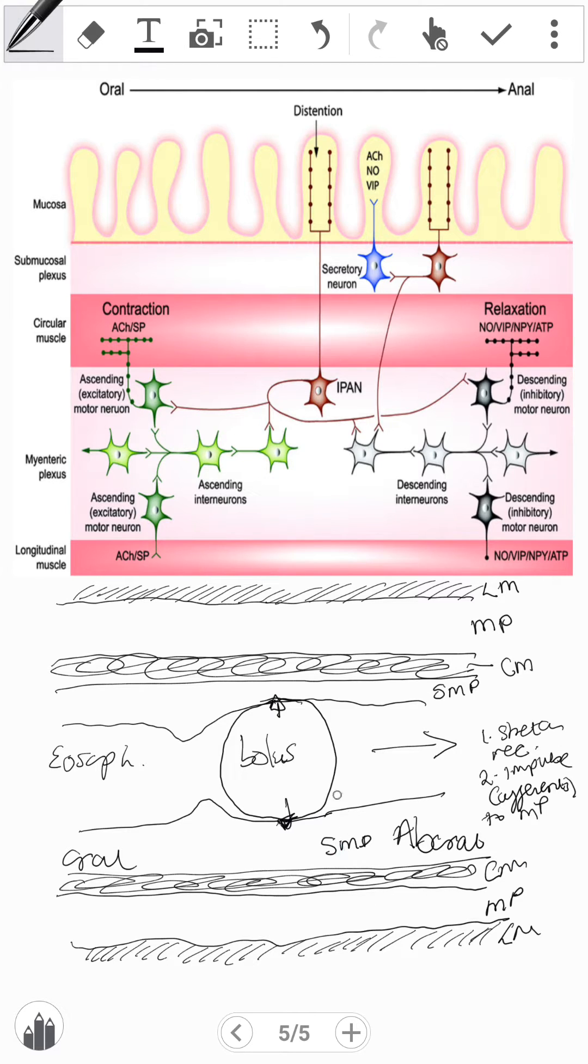So once the afferent impulse has been set in motion due to the stretch receptors being stimulated by stretch, we have afferent neurons going and synapsing in the myenteric plexus.